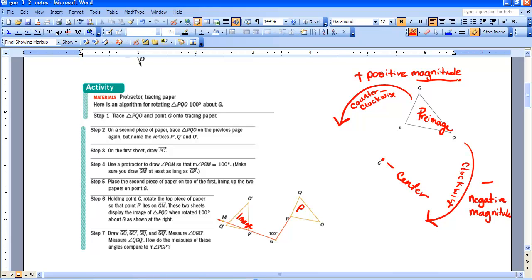And to do a rotation, we take and rotate each individual point of the figure. So in this case, I'm going to rotate my point P 100 degrees down here. I'm going to take my point Q and rotate that 100 degrees, and my point O, and I'm going to rotate that 100 degrees.